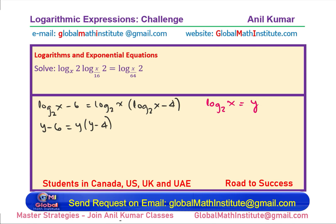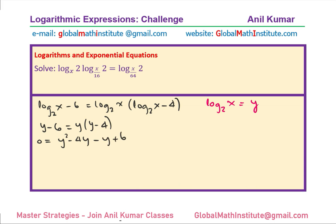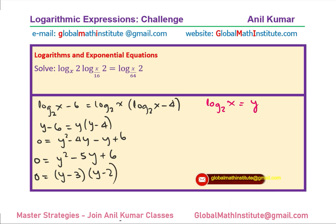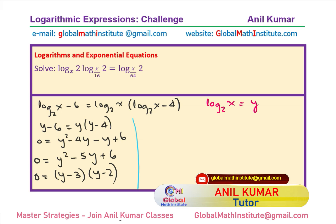This becomes a quadratic equation in y. Expanding and bringing all terms together: y minus 6 equals y squared minus 4y, which gives us y squared minus 5y plus 6 equals 0. We can factor this as (y minus 3)(y minus 2) equals 0, giving two solutions: y equals 3 or y equals 2.